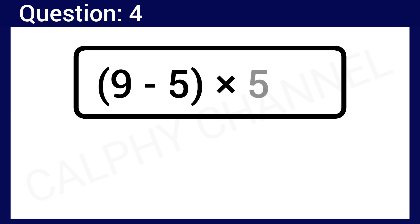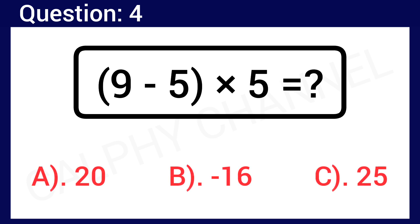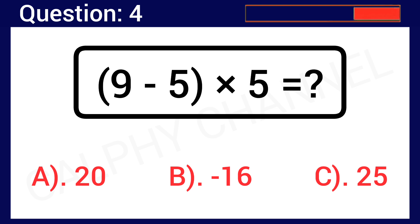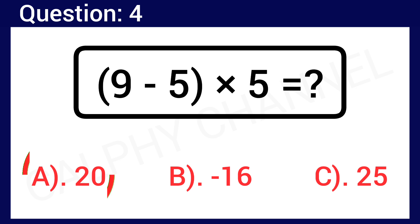Question number 4: 9 minus 5 in the bracket times 5 is equal to what? Option A: 20, Option B: negative 16, Option C: 25. The correct answer is Option A, which is 20.